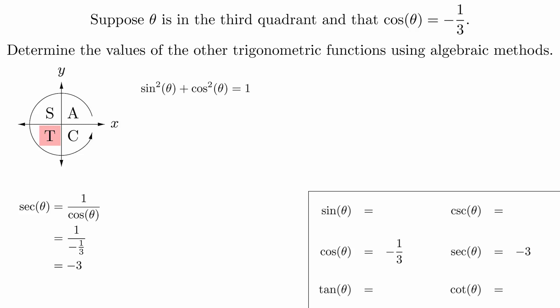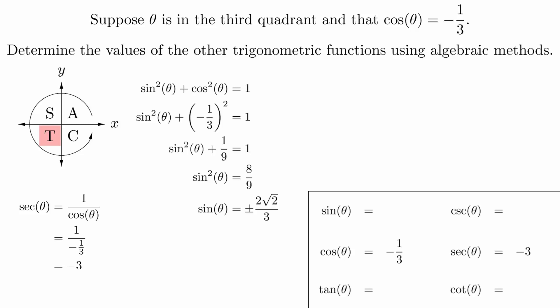The Pythagorean identity relates the sine and cosine functions together. By plugging in the value for cosine theta and solving for sine theta, we see that it must either be 2√2/3 or negative 2√2/3. But since we know that we're in the third quadrant, we know that the sine is going to be negative.